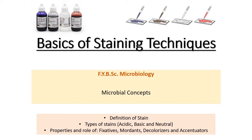This video covers the terms we generally use in staining techniques: what is a stain, types of stain — acidic, basic, and neutral — and the properties and role of fixatives, mordants, decolorizers, and accentuators. These are terms we use when performing different staining techniques, and we will learn what they mean, their properties, and their functions.